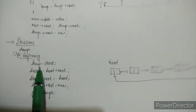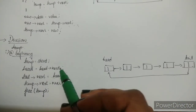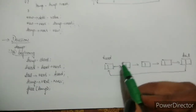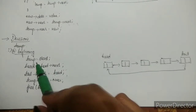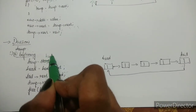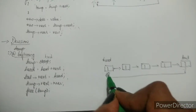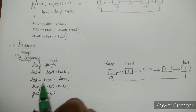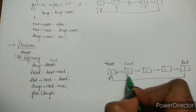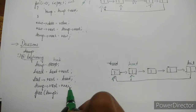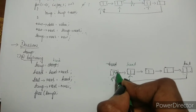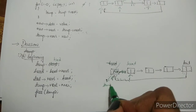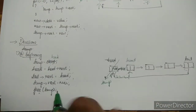For deletion at the beginning: temp = head, head = head->next, tail->next = head, temp->next = NULL, free(temp). The first node is stored in temp, head advances to the next node, tail is updated to point to the new head, the old head's next is set to NULL breaking its link, and then it is freed.